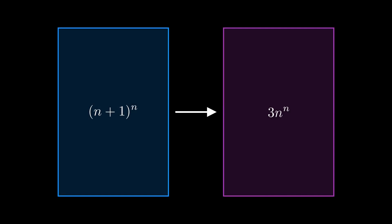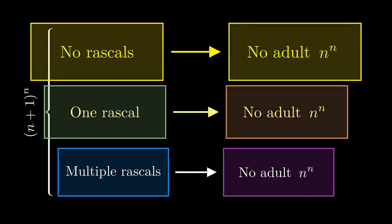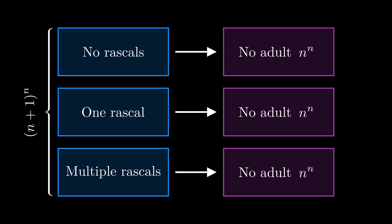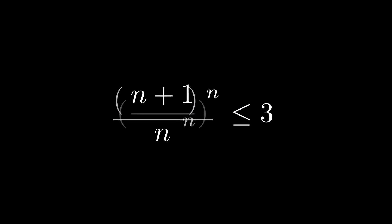Let's recap. We partitioned the n plus 1 to the n set into three parts, and showed that each was injectable into the set of size n to the n. That means that each subset on the left is smaller than or equal to n to the n. We've now proven that the sequence is bounded above by three.